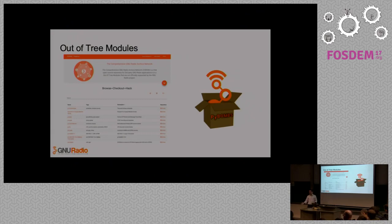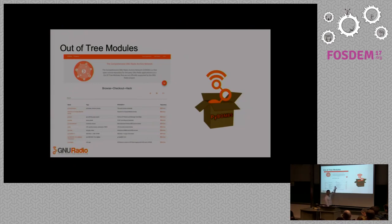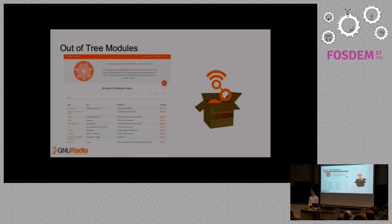As people create these modules, they post them on GitHub and they show up on CGRAN. CGRAN is our version of Perl's archive network — it stands for the Comprehensive GNU Radio Archive Network. If you go to cgran.org, this is the website you'll find. It's auto-populated from what's called PyBombs, which is our package maintenance system. You can apt-get install or DNF install GNU Radio on any major Linux distribution, and PyBombs is a great way to install out-of-tree modules.